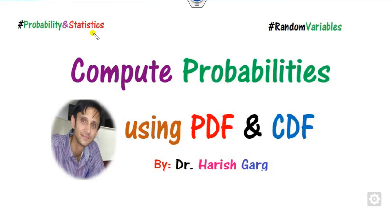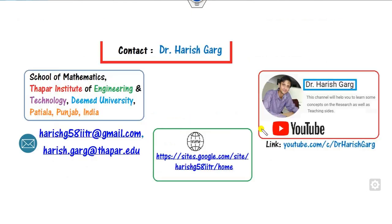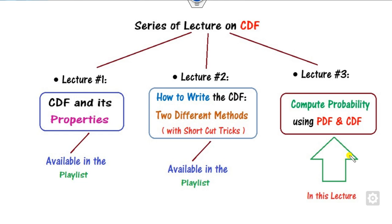Hello everyone, welcome to the next lecture on probability and statistics. Today we will discuss how you can find the probability of an event using the PDF (probability density function) as well as the CDF by two different methods. I am Dr. Garth, working at this school of mathematics. This is lecture number three related to the series on the cumulative distribution function.